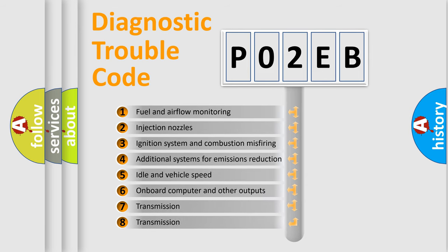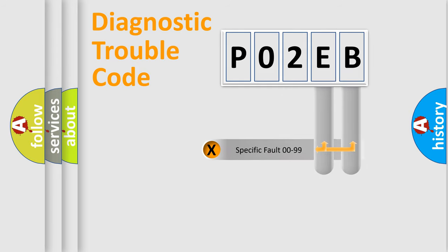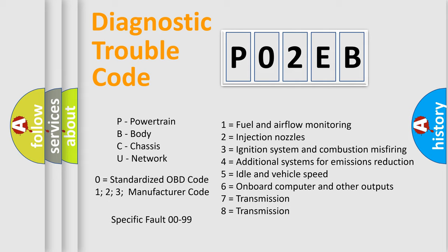The distribution shown is valid only for the standardized DTC code. Only the last two characters define the specific fault of the group. Let's not forget that such a division is valid only if the second character code is expressed by the number zero.